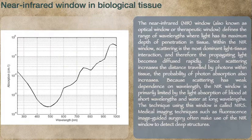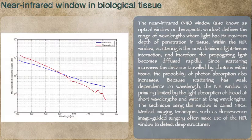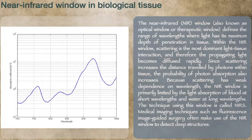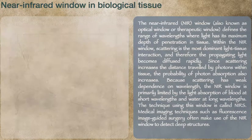Within the near-window, scattering is the most dominant light-tissue interaction, and therefore the propagating light becomes diffused rapidly. Since scattering increases the distance traveled by photons within tissue, the probability of photon absorption also increases.